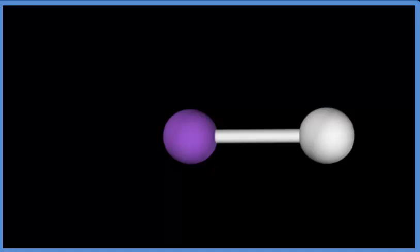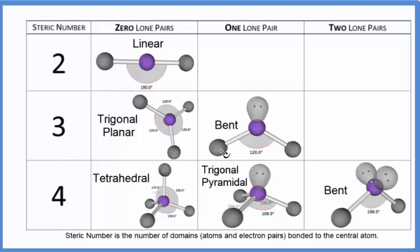When we have more than two atoms, it gets a little bit more complicated. Often we'll use a chart like this to look at the molecular geometry. So we look at the central atom, how many things it's bonded to. That gives us a steric number, and we look at how many lone pairs are attached. We can use that to figure out the molecular geometry.